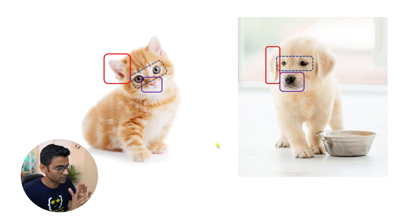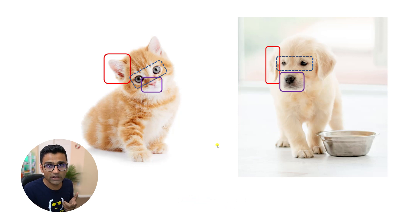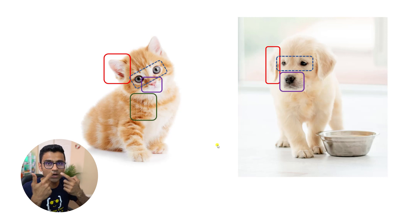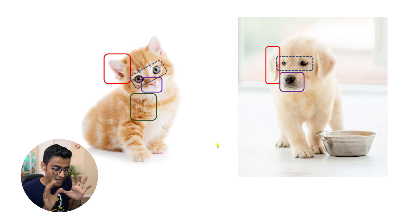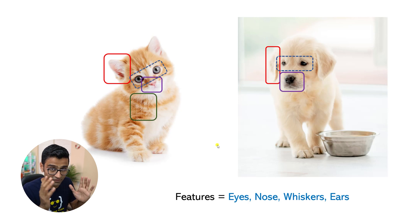Just think about this — if I give you just the ears, based on ears alone, sometimes you can have some clue what kind of animal it is. Cats also have very prominent whiskers — the things that come out from between the nose and the mouth. So based on these features, you can determine whether it's a cat or a dog. The features here are eyes, nose, whiskers, ears, and so on.